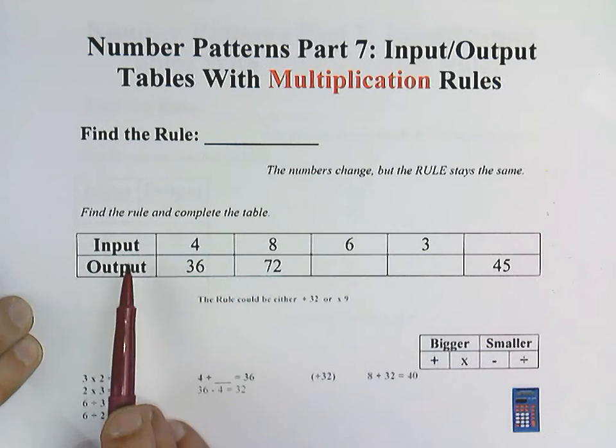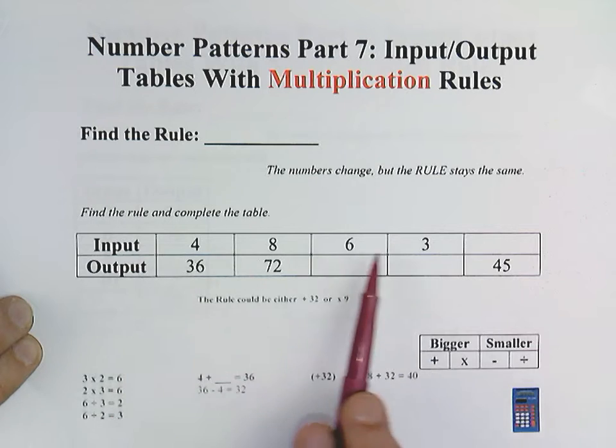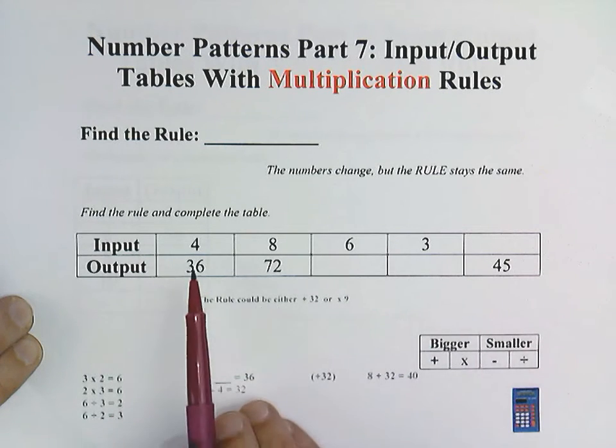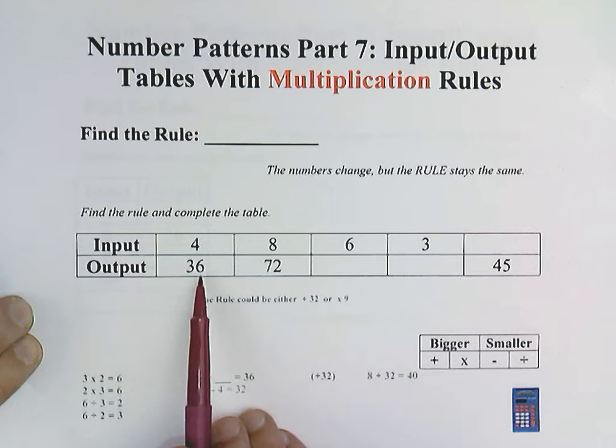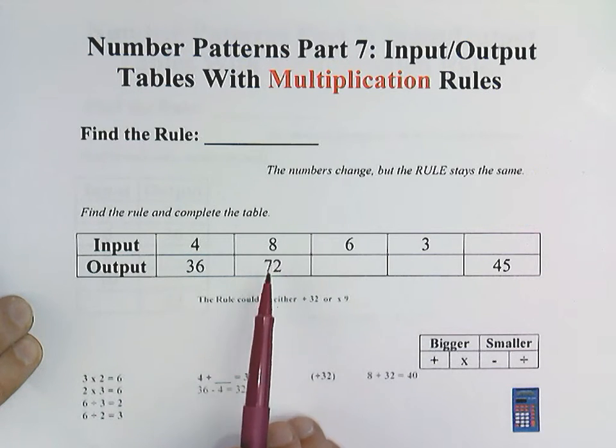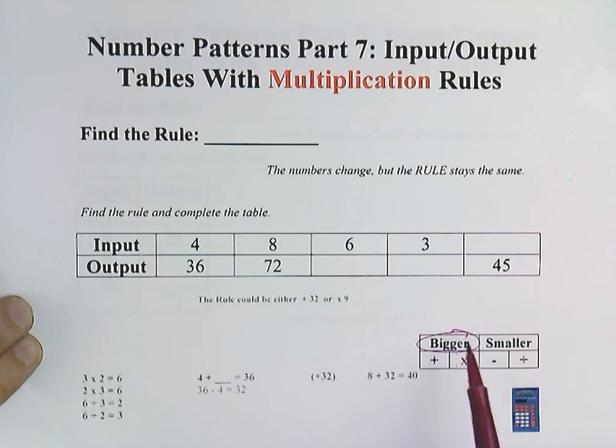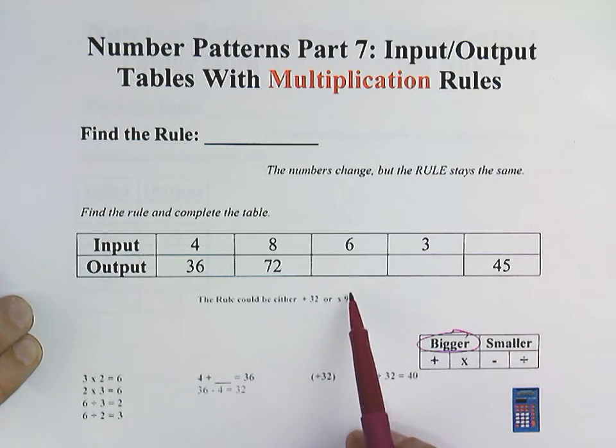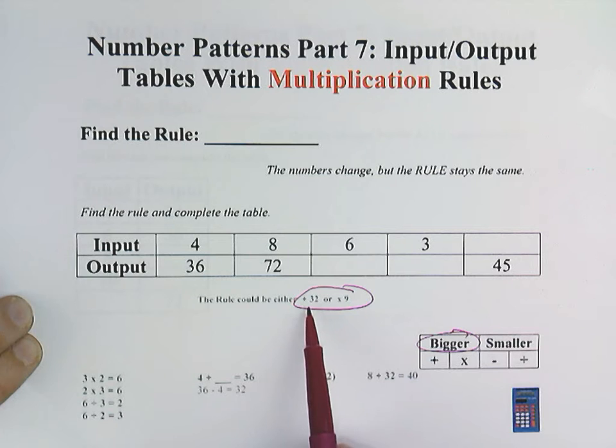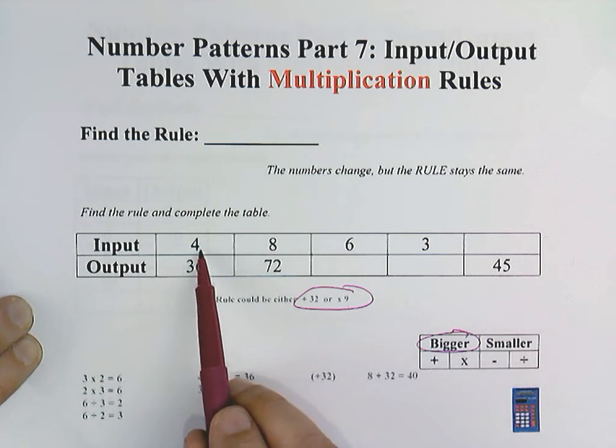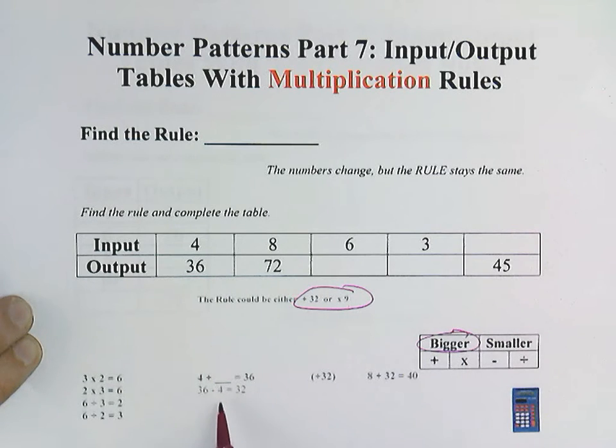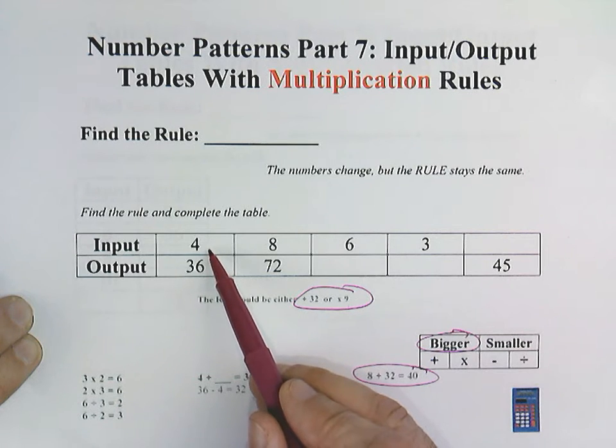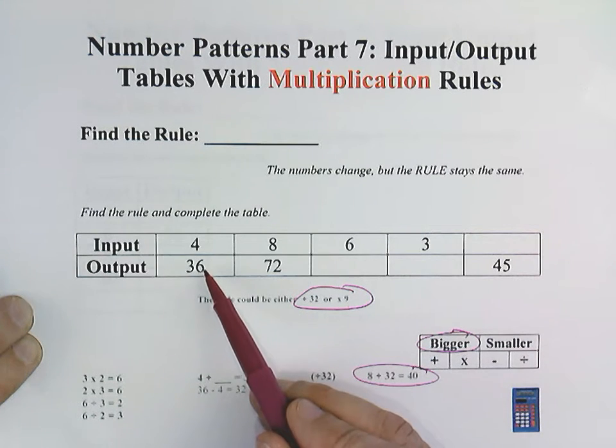Find the rule. You can see this input output table is running from left to right. Our first input is 4, output of 36, 8, 72. We are definitely getting bigger. Once again, it could be addition or multiplication. And to save time, it's either going to be a plus 32 or a times 9. It could be 4 plus 32 would equal 40, or 4 times 9 equals 36.